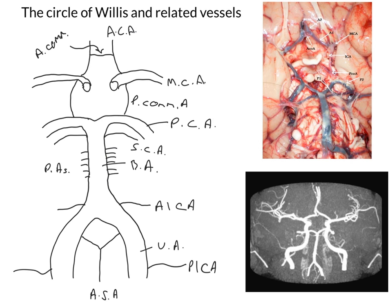It's important to note that this arterial circle surrounds many important structures — for example, the optic chiasm.